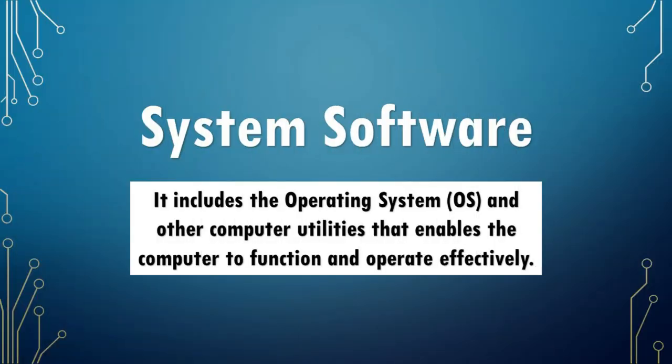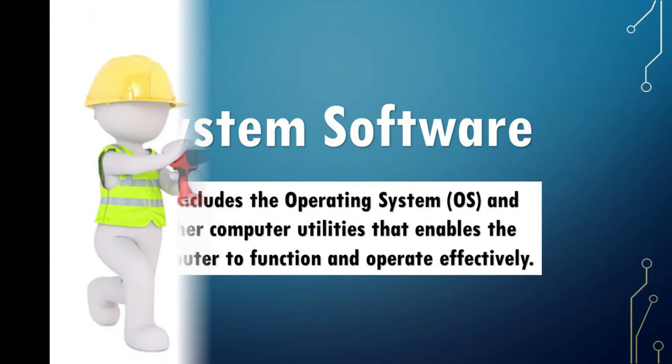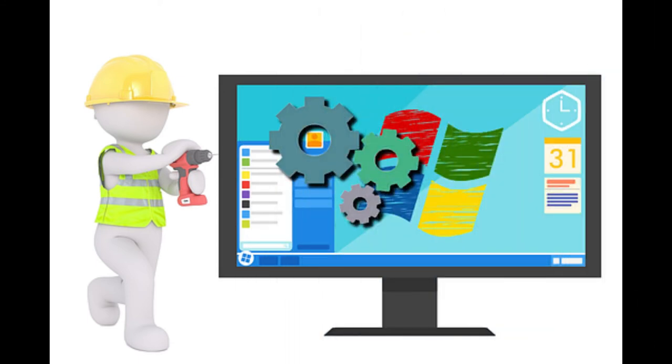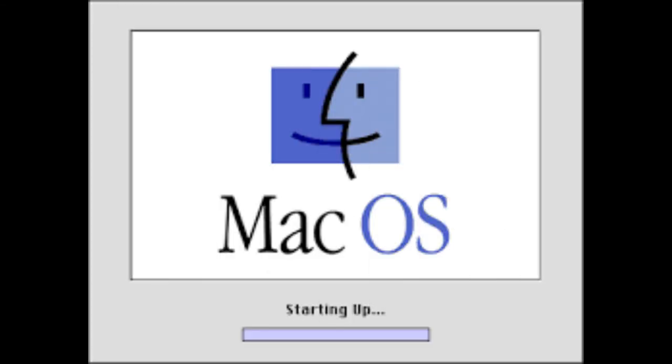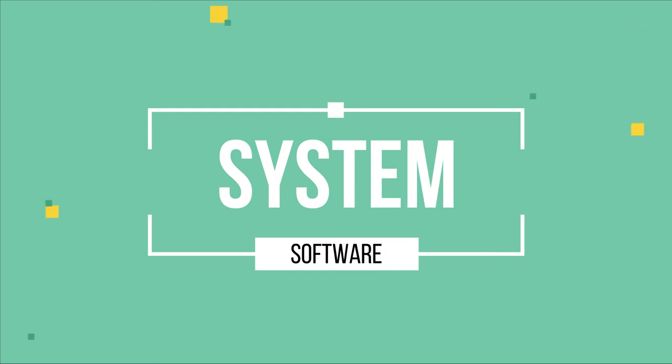System software includes the operating system (OS) and other computer utilities that enable the computer to function and operate effectively. System software helps in the interaction of the user, hardware, and software, intermediating between them so that the computer will function smoothly. A common example is the operating system, which we see when we start up a computer — such as Windows OS or Mac OS. Without it, computers will not run or start up. Always keep in mind that system software helps make any computer operation run as smoothly as possible.